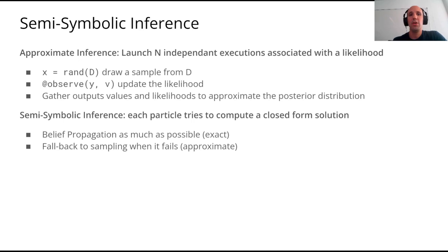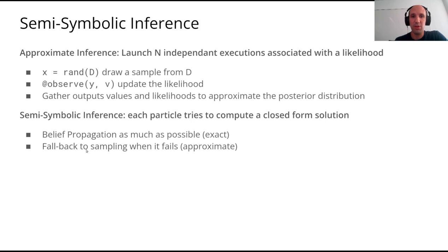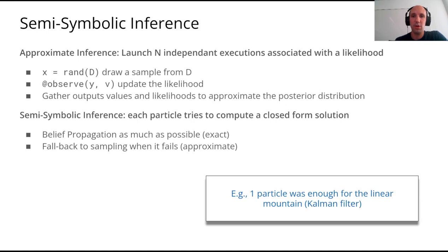This is what we call semi-symbolic inference: we launch independent executions called particles and compute the likelihood of each particle using the run function and the observed macro. We gather all output values and likelihoods to get an approximation of the posterior distribution. When possible, we do exact inference to compute explicitly the law of the hidden state X using belief propagation in closed form. When not possible, we do sampling. For example, in the previous animation, using just one particle in the linear Gaussian case recovers the Gaussian shape with the Kalman filter.